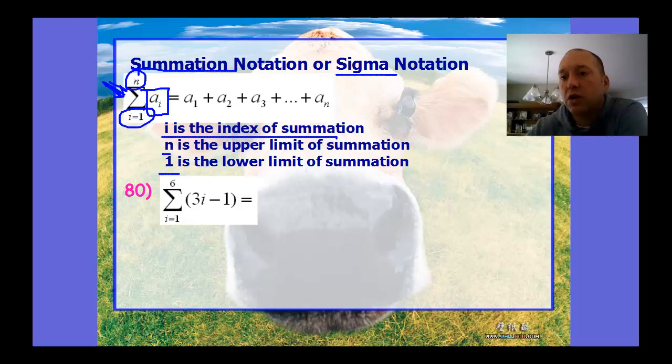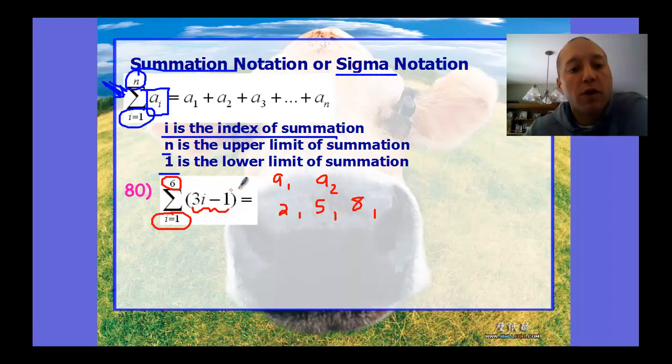For this example, look at the summation notation. We have a lower limit of 1, so we're starting from the first term, adding all the way to the sixth term. The 3i minus 1 is the pattern. We can find these numbers. The first number: plug 1 in for i, 3 minus 1 is 2. The second one: plug 2 in, 3 times 2 is 6 minus 1 is 5. Continue on: plug 3 in, 9 minus 1 is 8. Plug in 4: 12 minus 1 is 11. Plug in 5: 15 minus 1 is 14. You can see there's a pattern here, increasing by 3. Why? Because this is a linear pattern where 3 is my slope, the constant change.